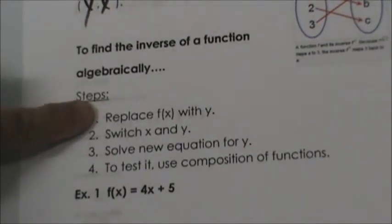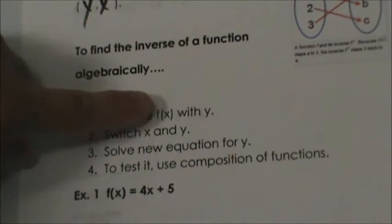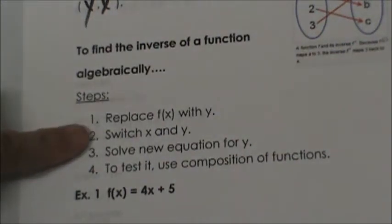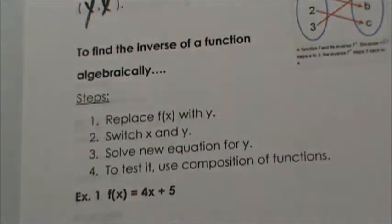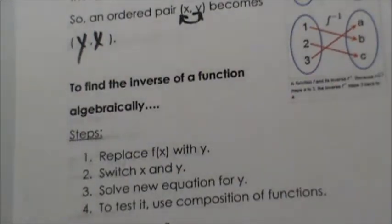The first step is we're going to take a function and replace the function notation f(x) with the value y — we're just replacing f(x) with y. Step two is we're going to switch the x and the y positions, just like we've reversed the order of the ordered pairs. Then we're going to solve the new equation for y, and that will give us the inverse function.